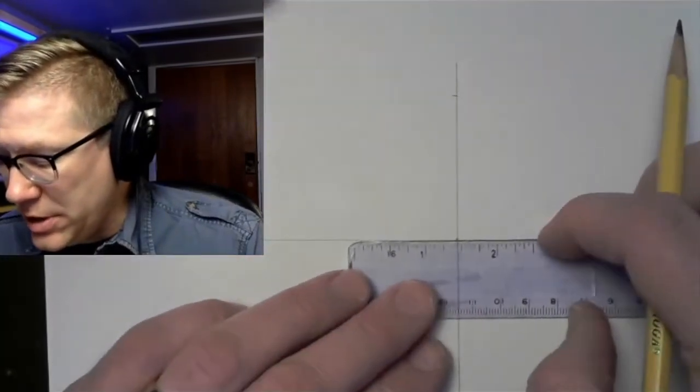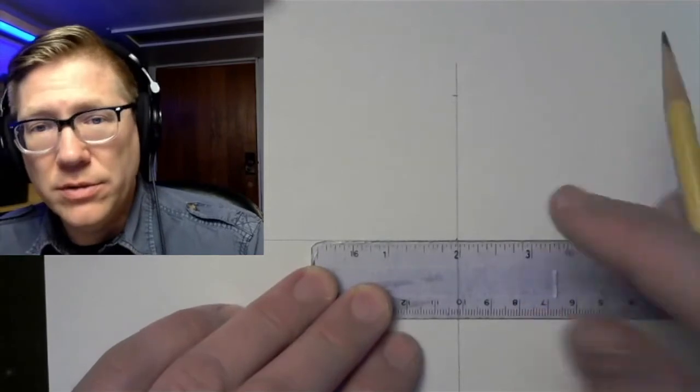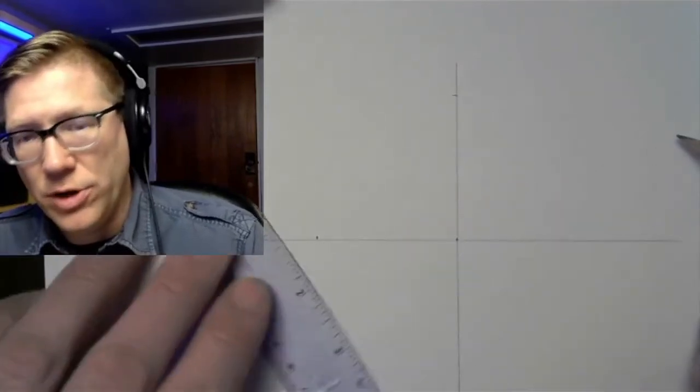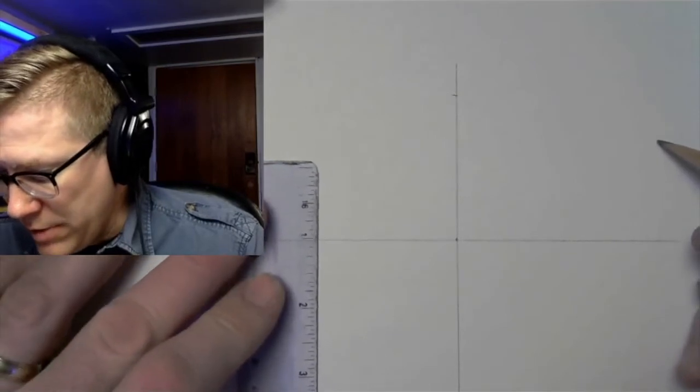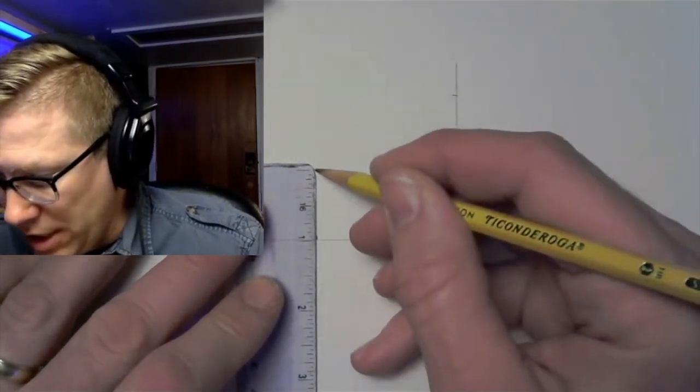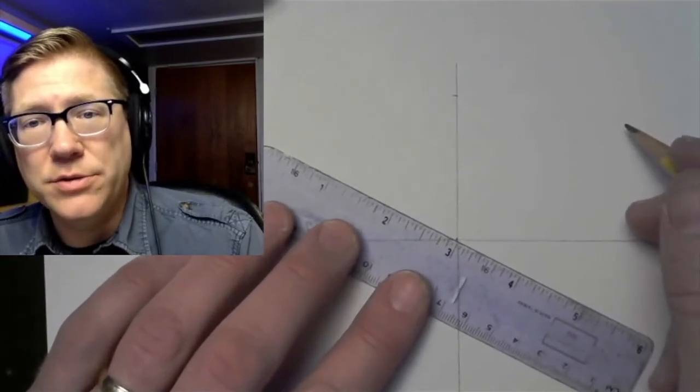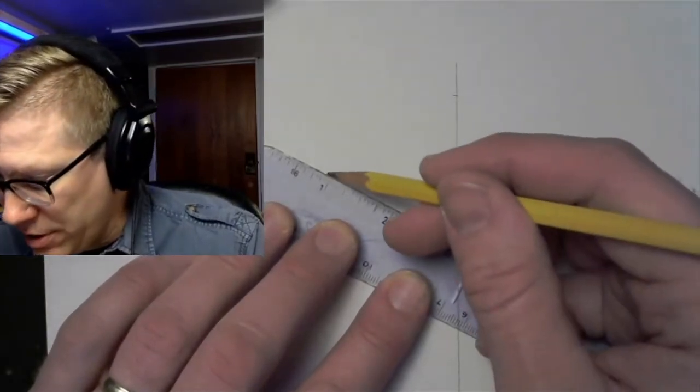What I'm going to do is measure two inches over from that center point and then I'm going to turn my ruler and make a mark at one inch up. Just like we saw with the graph paper, that's going to give us a pretty close approximation of our 30 degree angle.